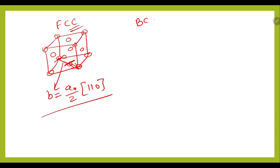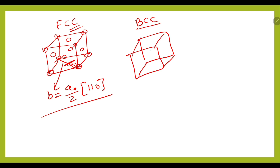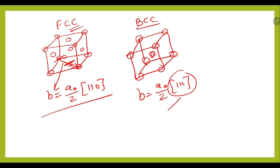In case of BCC, the Burgers vector is b = (A₀/2)⟨111⟩. This is the most densely packed direction in the BCC unit cell, and the Burgers vector direction is along ⟨111⟩.